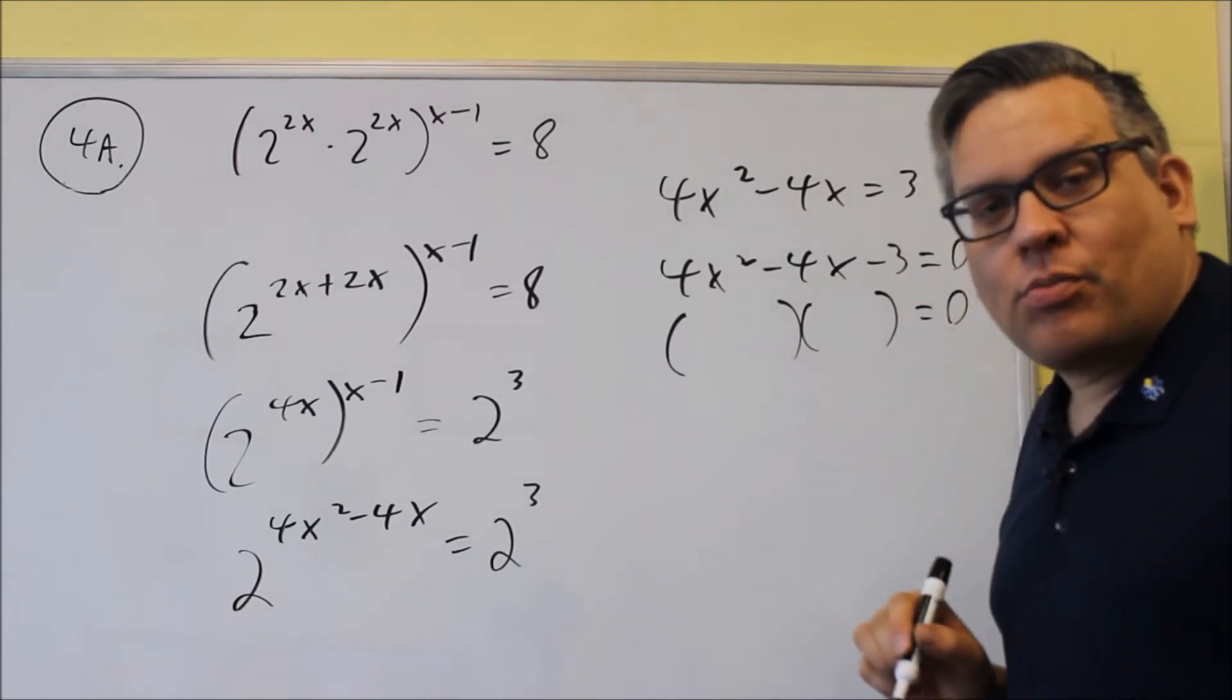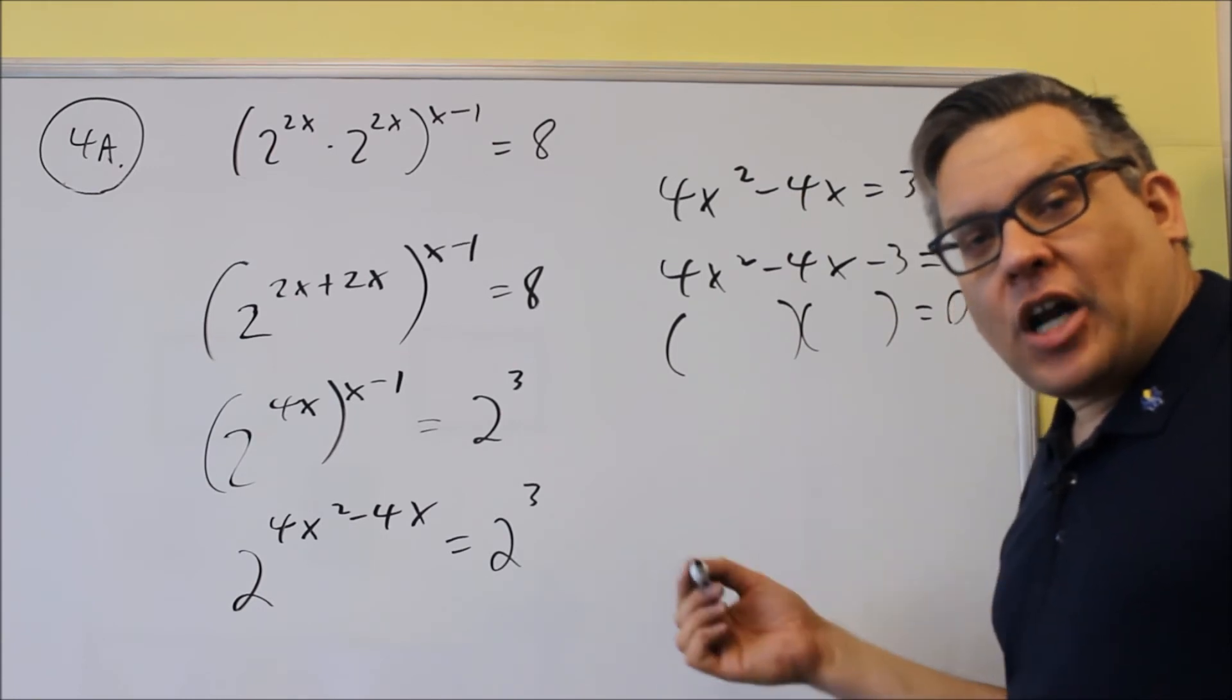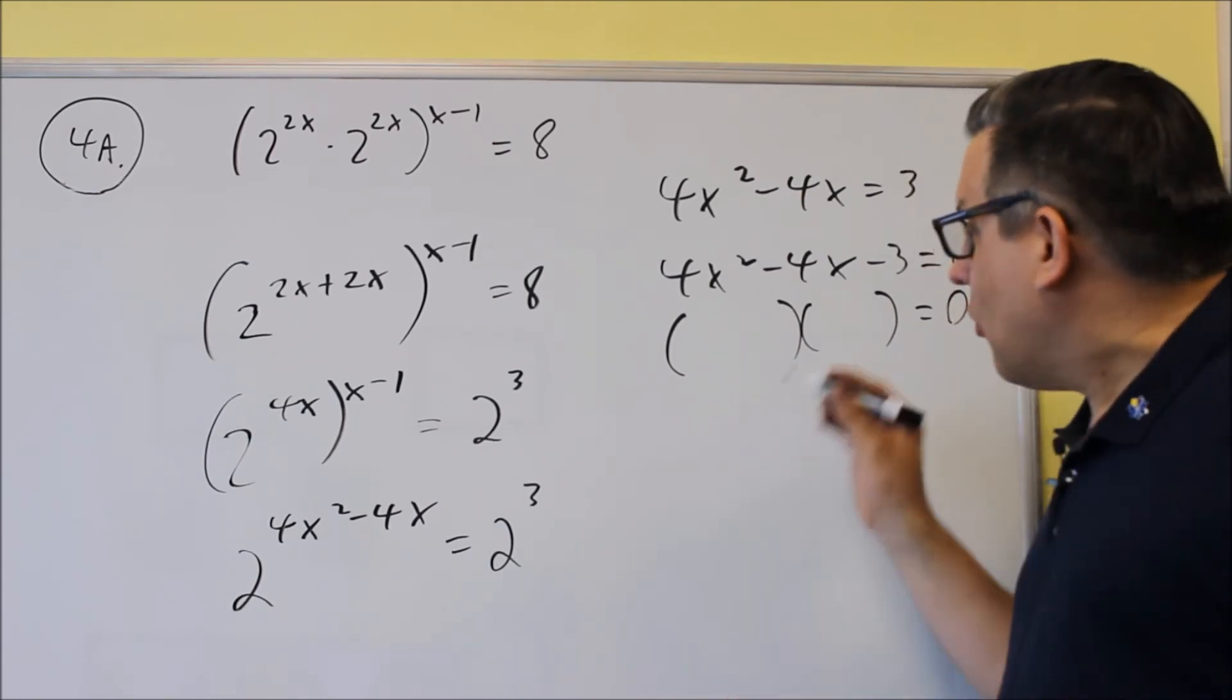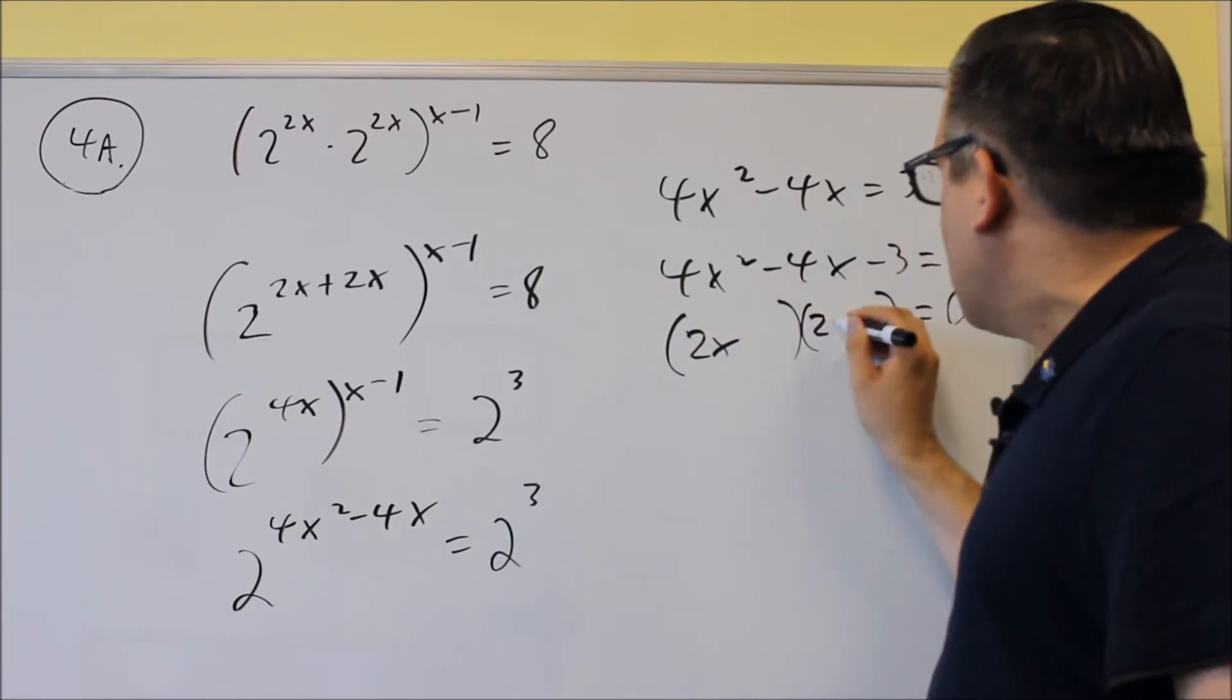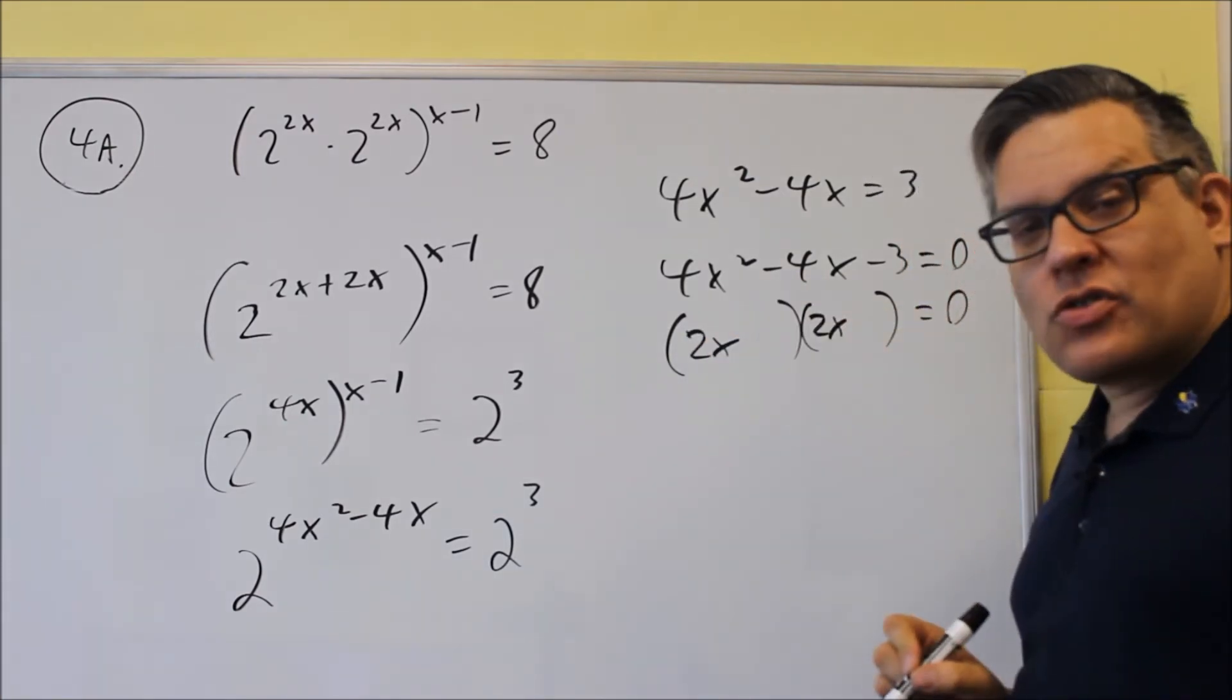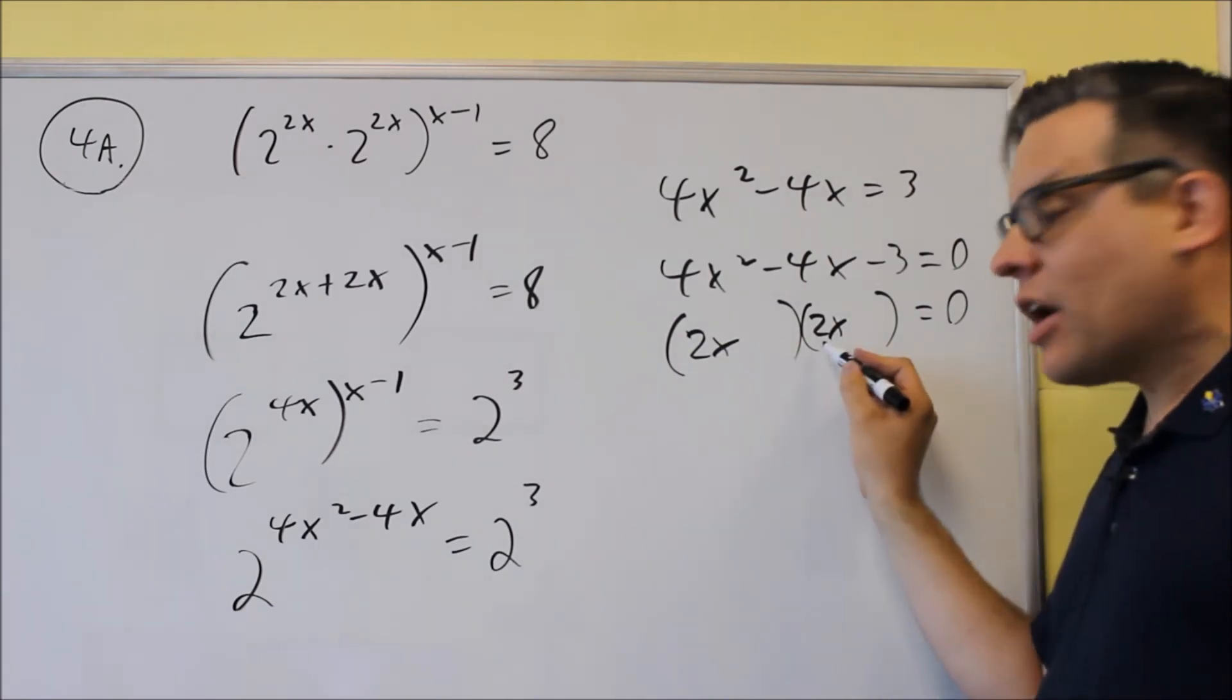You can use whatever factoring method you want, bottoms-up or grouping method that we talked about on the first test, or you can just do it by trial and error. So I know the first one, for instance, the 4x squared, I've got to have a 2x and a 2x.